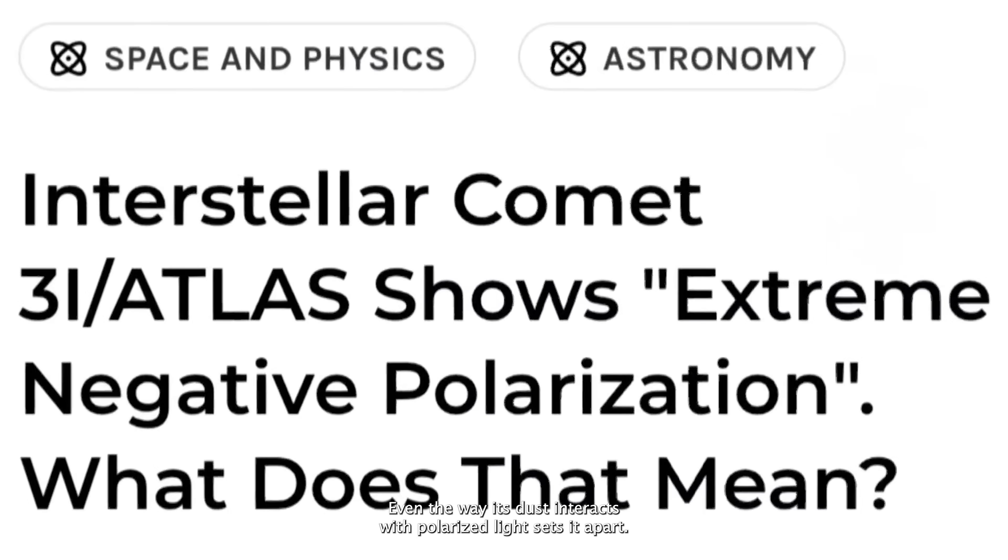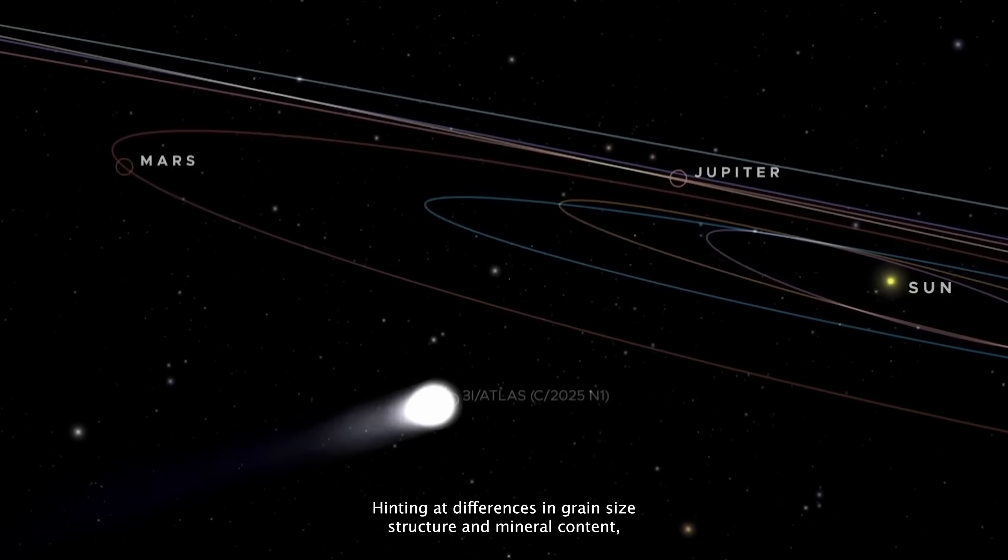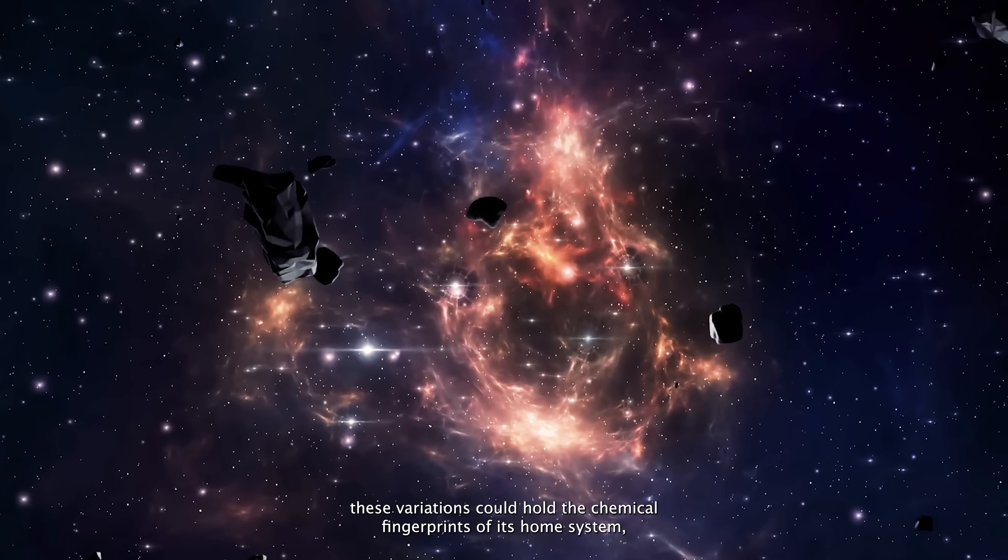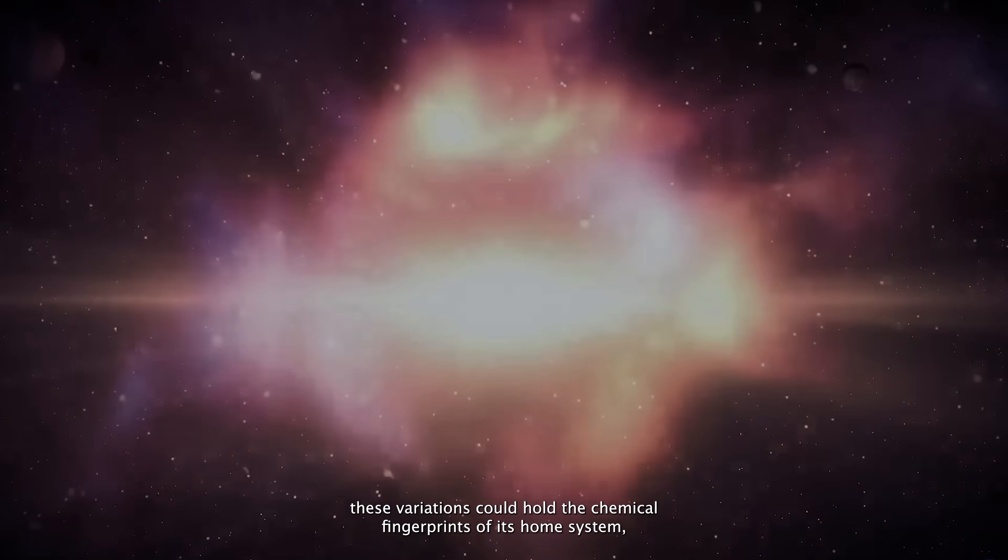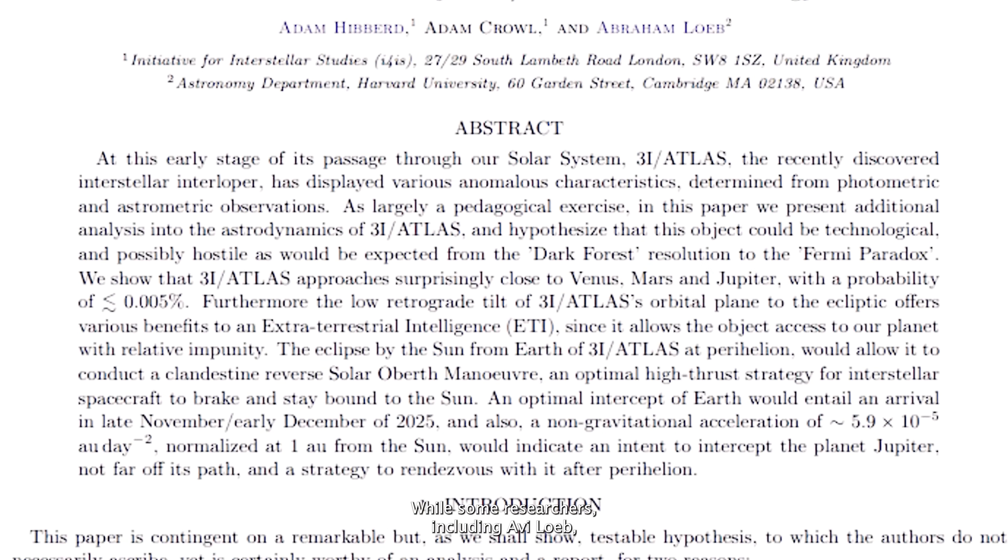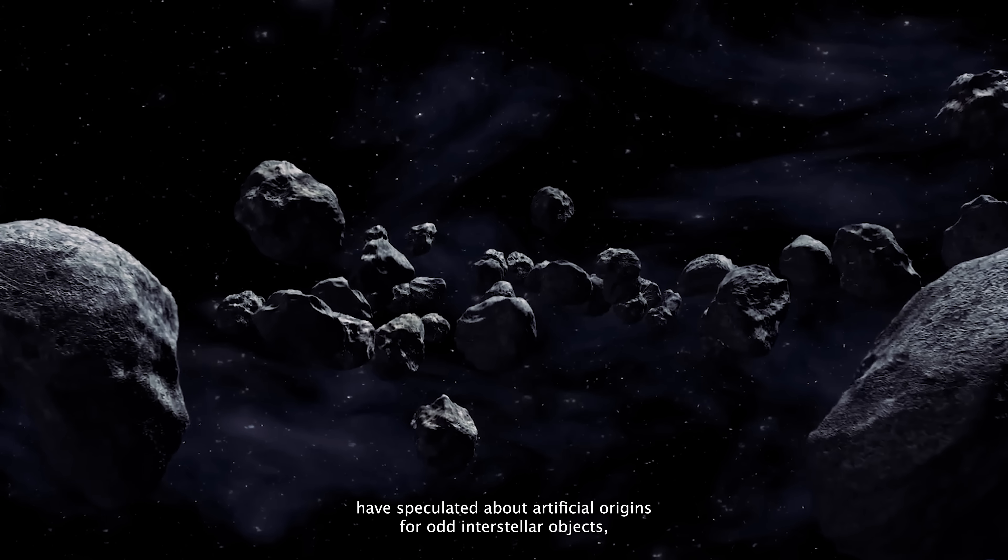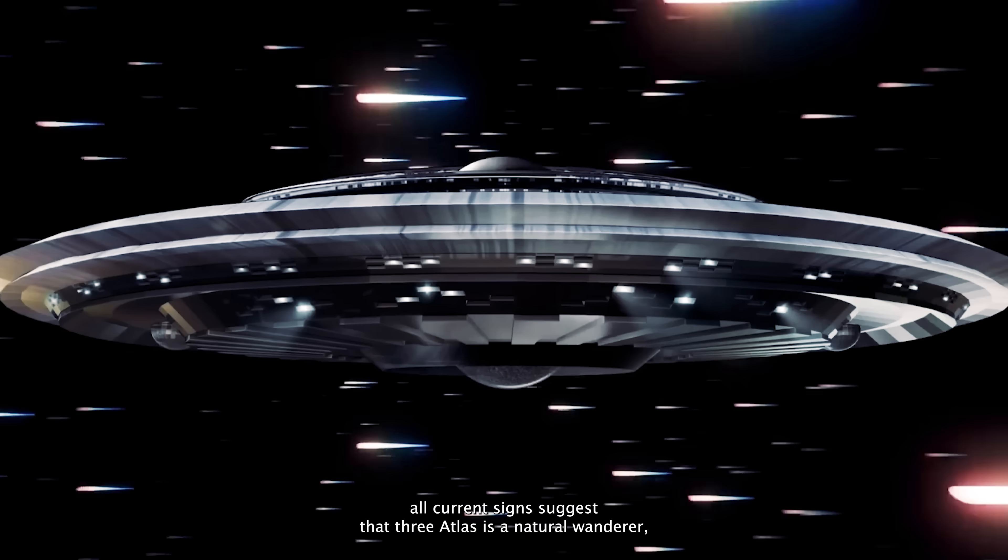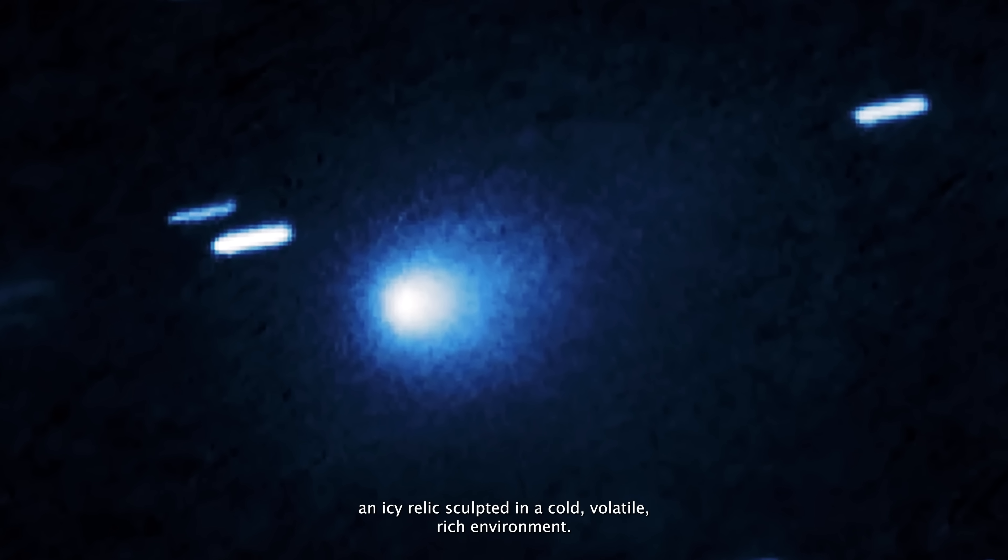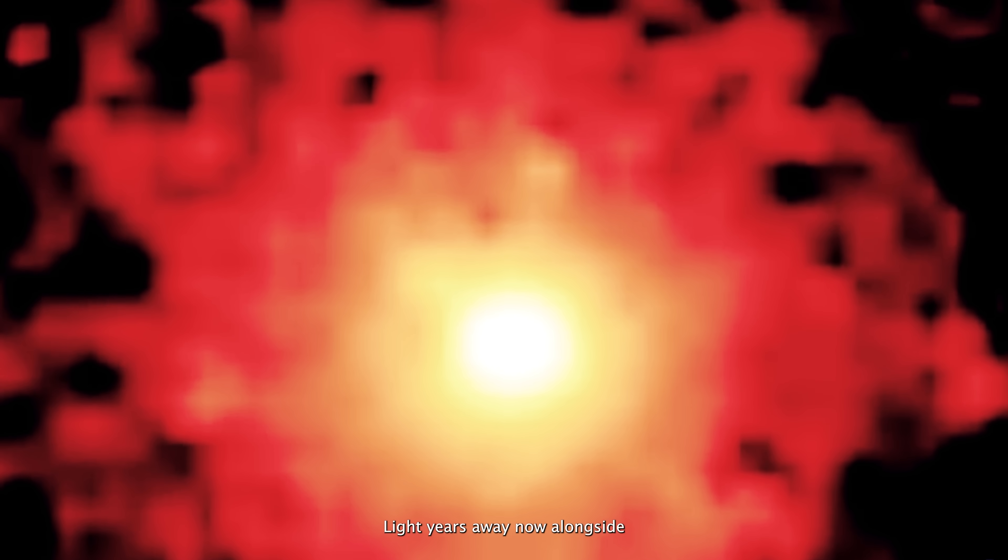Even the way its dust interacts with polarized light sets it apart, hinting at differences in grain size, structure, and mineral content. These variations could hold the chemical fingerprints of its home system, helping scientists piece together the conditions where it was born. While some researchers, including Avi Loeb, have speculated about artificial origins for odd interstellar objects, all current signs suggest that 3i Atlas is a natural wanderer, an icy relic sculpted in a cold, volatile-rich environment light-years away.